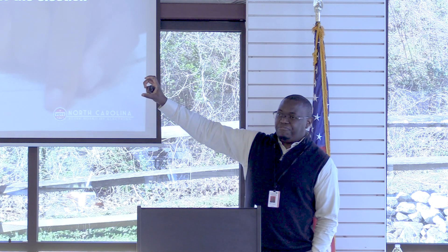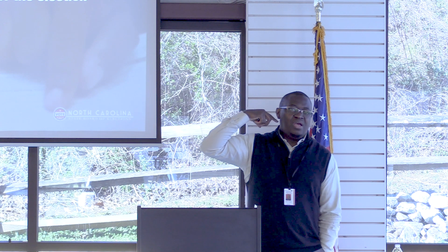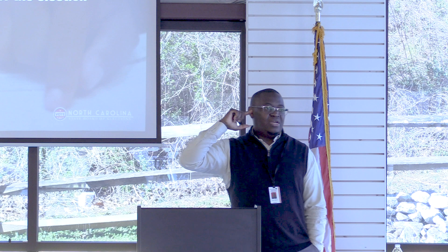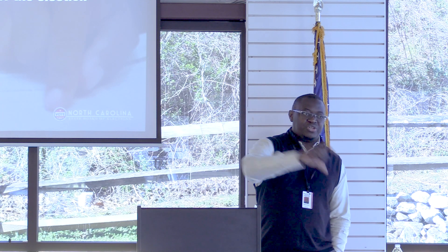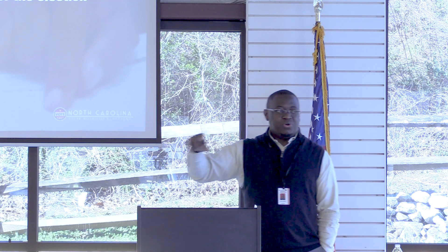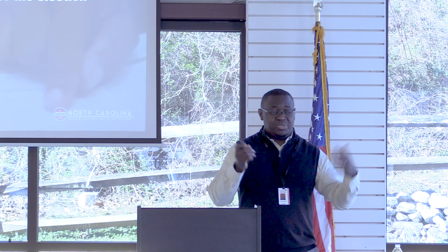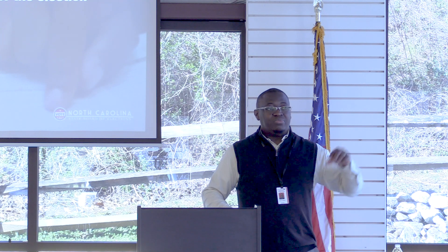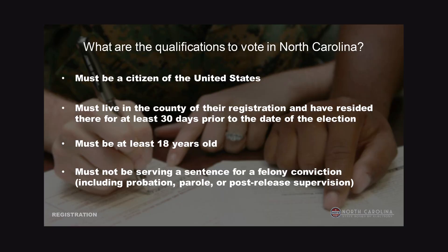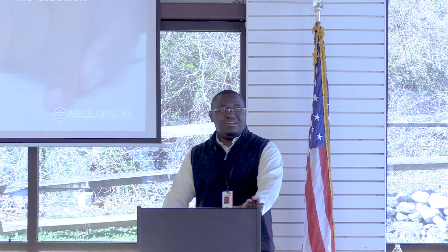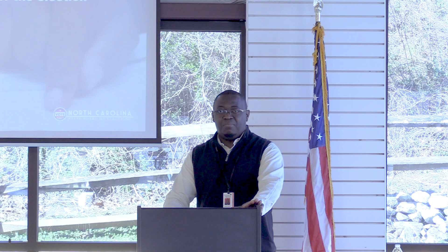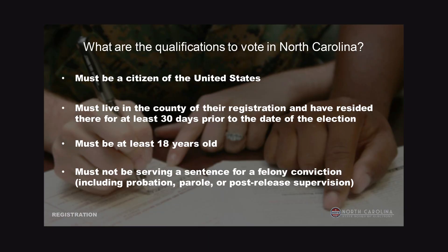The 30-day county residency requirement confuses many people. On election day we get calls from people saying they weren't registered at their location — often they moved but never updated their registration. Names get purged when someone moves to a different county, and some had to drive to another county where their name was still on the list. Voters must be 18 on election day, though 17-year-olds can register and vote in a primary if they're turning 18 by election day. People serving a sentence for felony conviction cannot vote, but those with misdemeanors can.